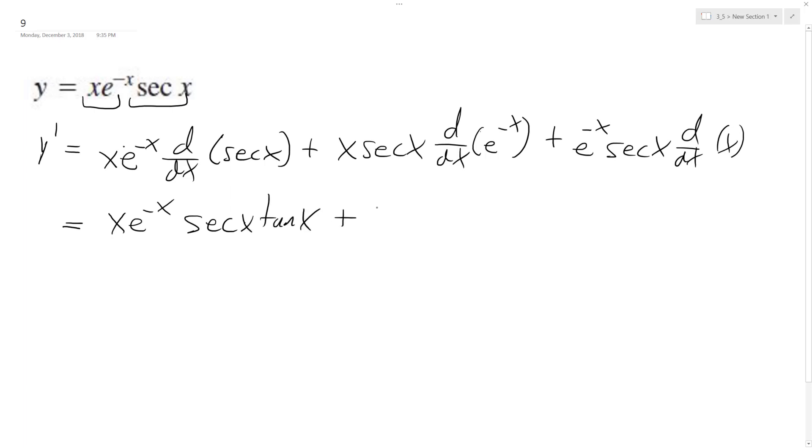Plus x secant x, and the derivative of e^(-x) is negative e^(-x). Finally, the derivative of x is just 1.